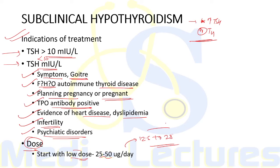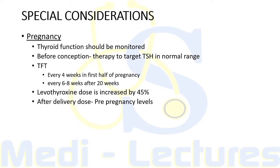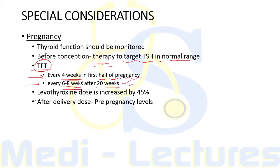Special considerations in pregnancy: maternal hypothyroidism may adversely affect fetal neural development and is associated with adverse gestational outcomes including miscarriage and preterm delivery. Before conception, therapy should be started targeting TSH in the normal range. Thyroid function tests should be done every four weeks in the first half of pregnancy and every four to eight weeks after 20 weeks. Levothyroxine dose is increased by 45% during pregnancy and reduced to pre-pregnancy levels after delivery.